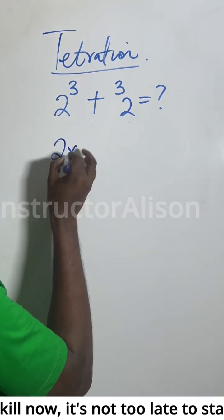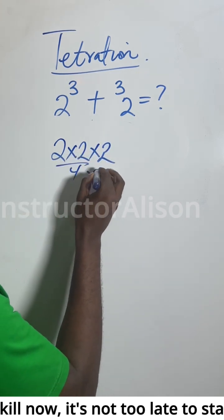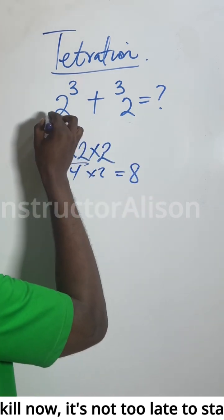What is 2 to the power of 3? This means 2 times 2 times 2. 2 times 2 gives us 4 times 2, that would be 8. So this one gives us 8.